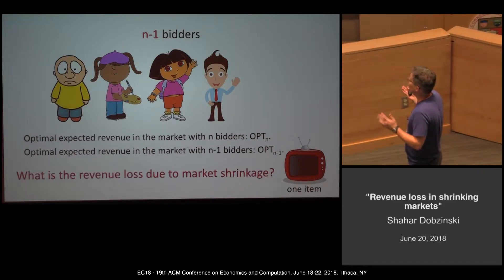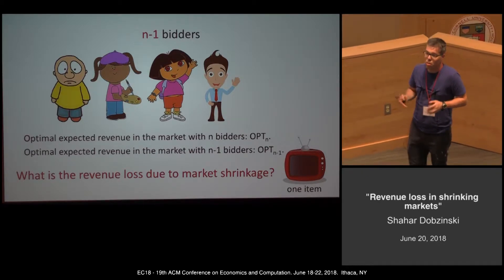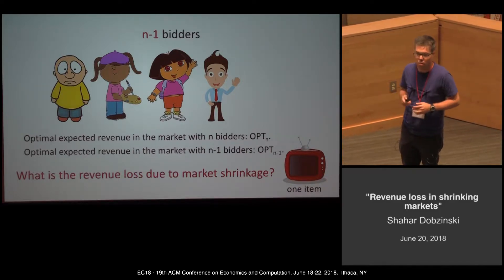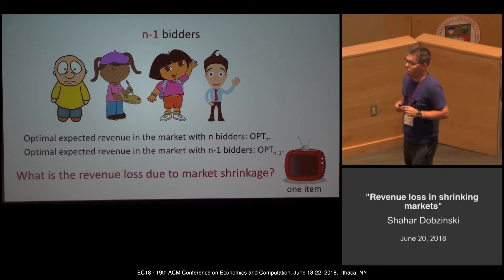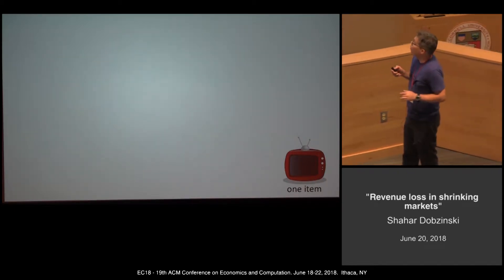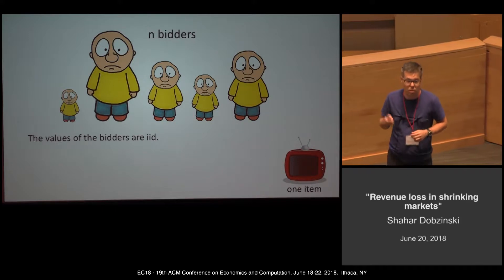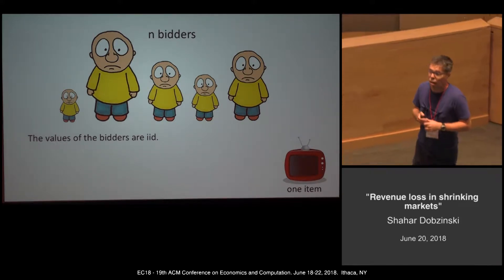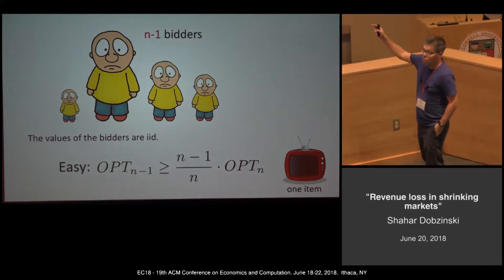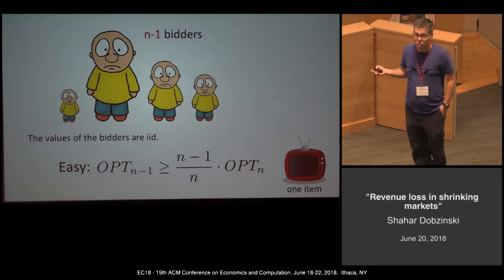The question we want to understand is: what is the revenue loss due to market shrinkage? What is the maximum revenue we can lose because one bidder leaves the market? One easy case is when the values of all bidders are drawn from the same distribution independently — the IID case. It's an easy exercise to show that opt(n-1) equals (n-1)/n times opt(n).